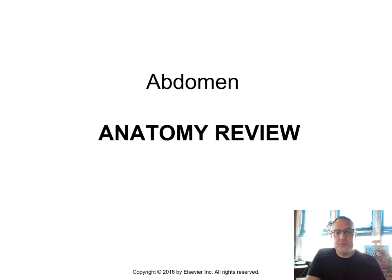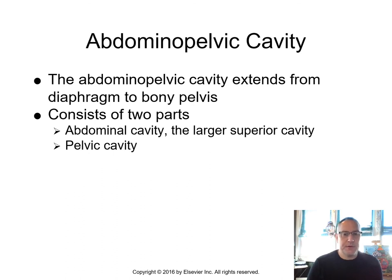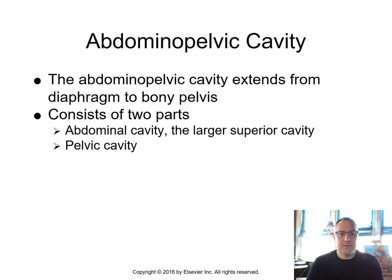Let's begin with a quick review of anatomy. The abdominopelvic cavity extends from the diaphragm to the bony pelvis and consists of two parts: the abdominal cavity, which is the larger superior cavity, and then the pelvic cavity. Notice the terminology — there's a combining vowel 'O' joining pelvis and abdomen, so we call it the abdominopelvic cavity.